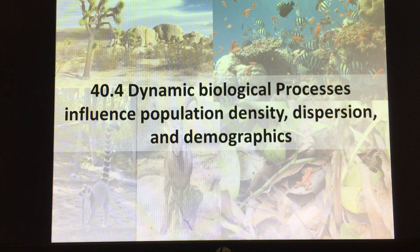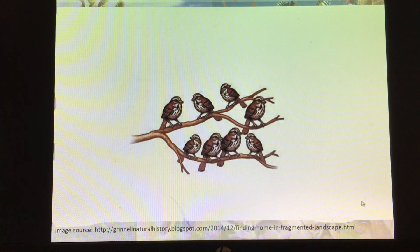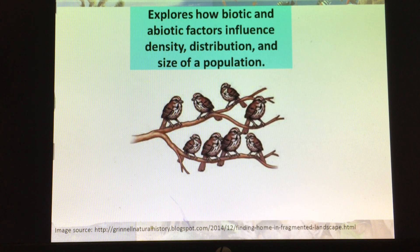In this chapter we're studying populations and things that influence population density, their dispersion or how they're spread out, as well as their demographics. When we look at populations, what we're really looking at is how the biotic factors and abiotic factors influence these characteristics.